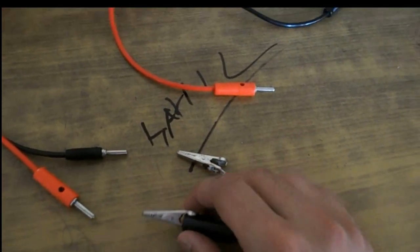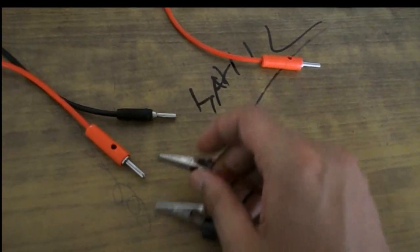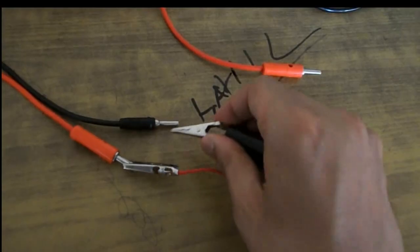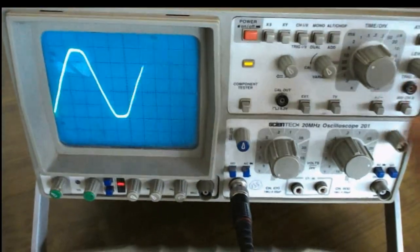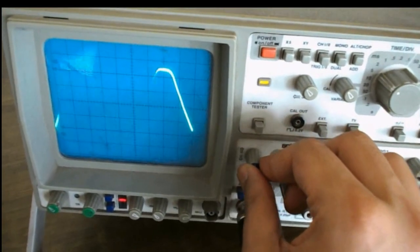First, we'll see what happens when the wave comes out from the secondary of a transformer. So I'm attaching this to this. And now we can see from the oscilloscope that we have a full wave just after it has passed through the transformer.